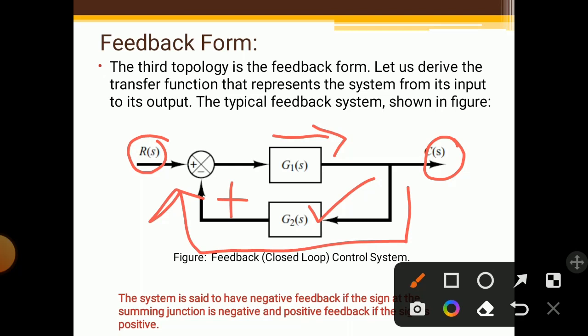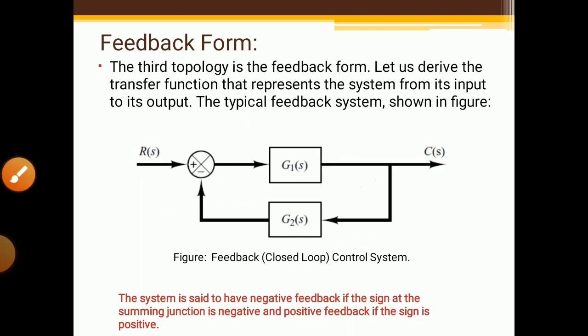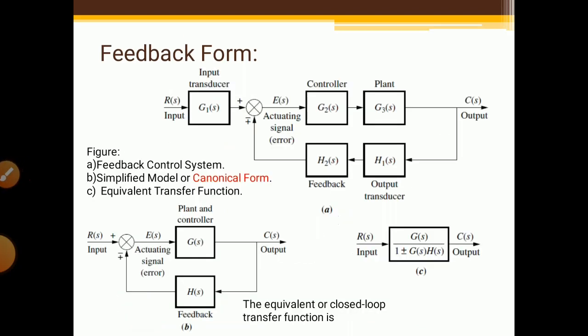So we need to understand what is a negative feedback loop and what is a positive feedback loop. You have to check the sign of the feedback element — whether it is negative or positive at the summing point. Here, the negative sign at the summing point indicates that this feedback loop is a negative feedback loop. So we have to always check the sign.